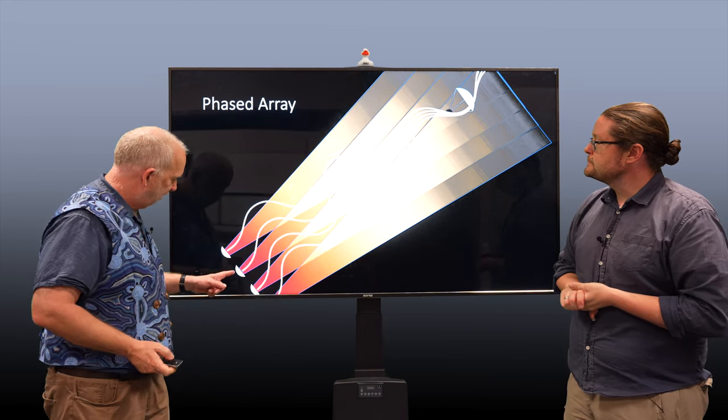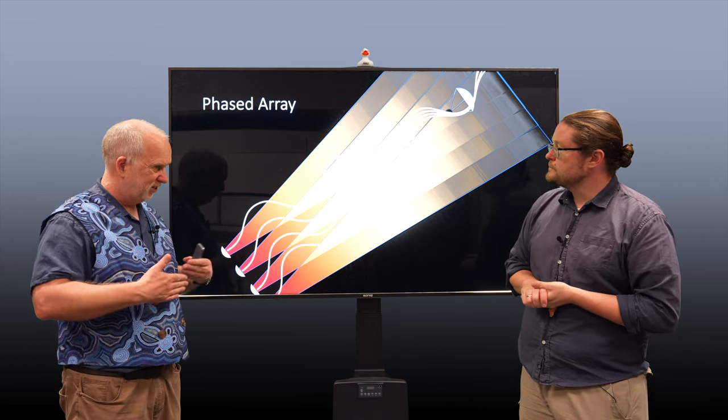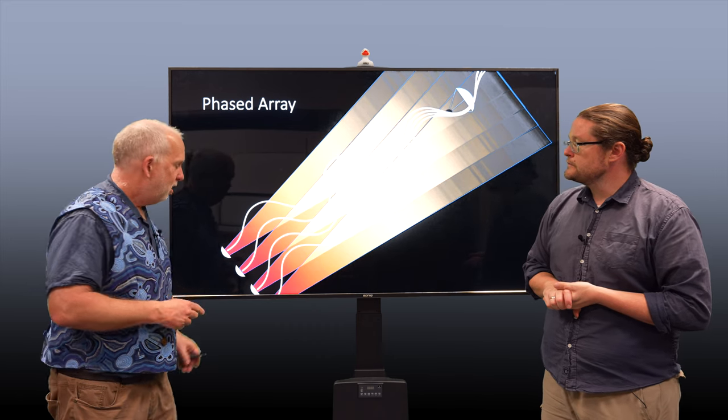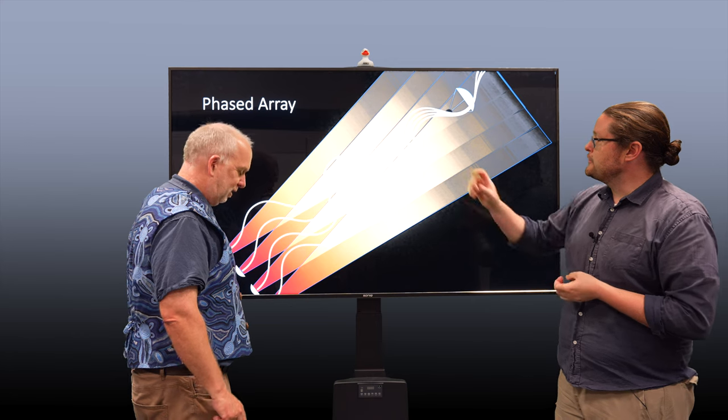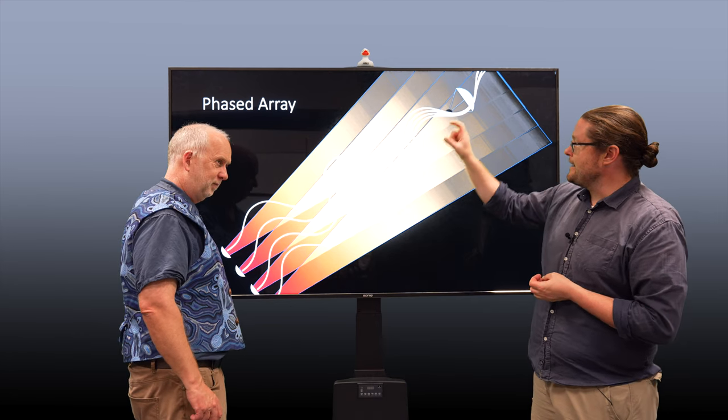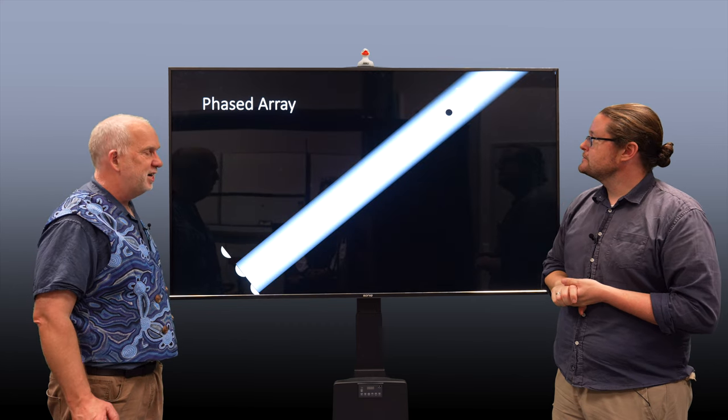But if they're all emitting perfectly lined up, this is what's called in phase. So the light emission from all the lasers is perfectly in sync. Then they will all add up only in the middle. And so you design it so that they add up at the spot your satellite is, for instance. And that effectively gives you a very narrow beam.